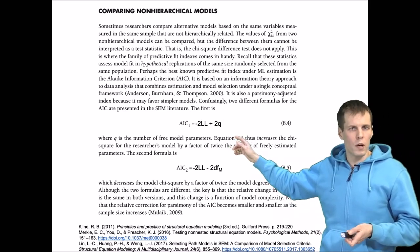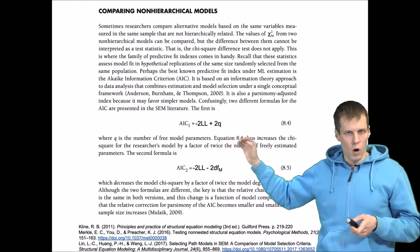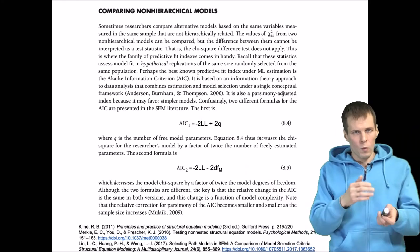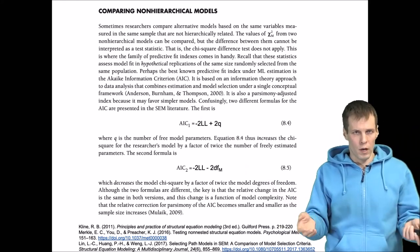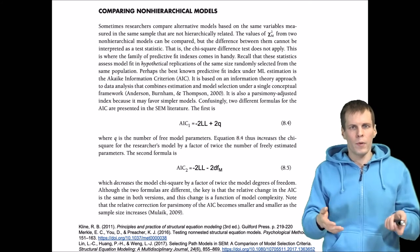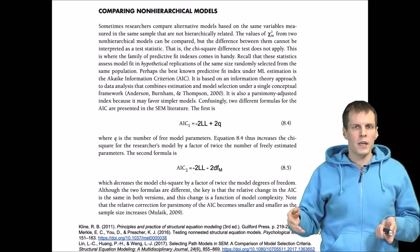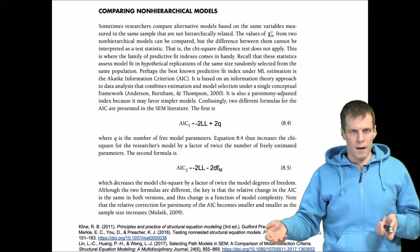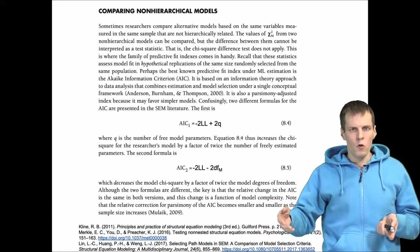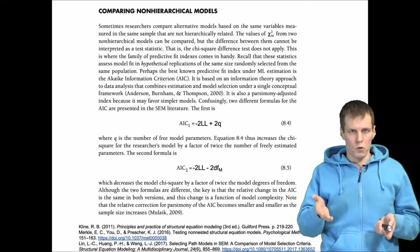Every time we add something to the model, the minus two log likelihood will get smaller. The likelihoods are actually very small numbers, very close to zero, and when we take a log of the likelihood, we get a very large negative number. When the fit improves, the log likelihood gets closer and closer to zero.